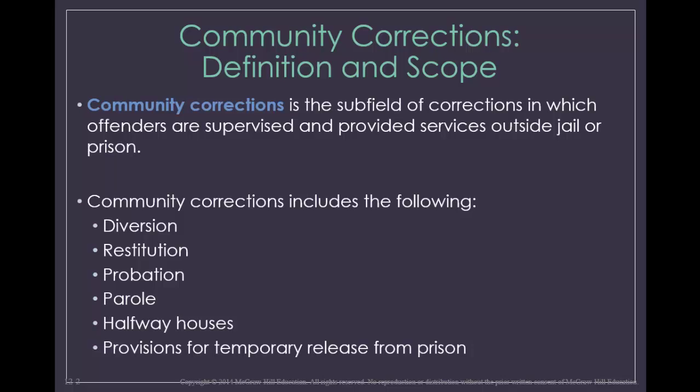Offenders can be placed in diversion programs which offer the offender a chance to avoid formal prosecution, provided that the individual abides by the conditions of the diversion program. More traditional community correction programs include things like restitution, probation, parole, halfway houses, and furlough programs. We'll talk about these all individually throughout the lecture.